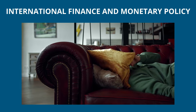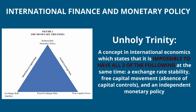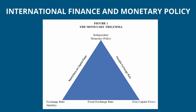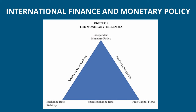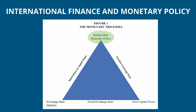A central concept here for IPE is the unholy trinity — an economic principle that stipulates states can only achieve two of the three following policy directions: monetary policy autonomy, exchange rate stability, and the free flow of capital. For instance, if a country wants to maintain exchange rate stability and ensure capital mobility, it will have to sacrifice monetary policy autonomy and implement fixed exchange rates. This is because the country cannot simultaneously control its monetary policy while allowing free capital movement, as capital flows can exert pressure on the exchange rate and undermine stability. Similarly, if a country aims to have exchange rate stability and retain monetary policy autonomy, it must restrict capital mobility, because capital movements can create volatility in exchange rates and limit the effectiveness of monetary policy.